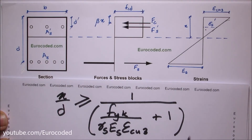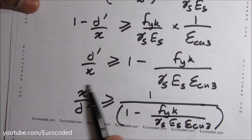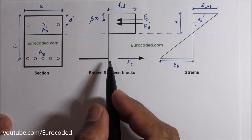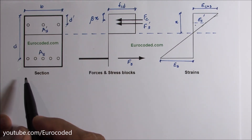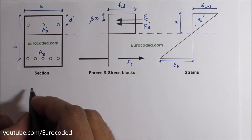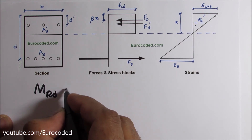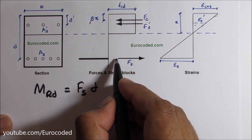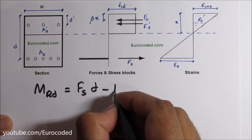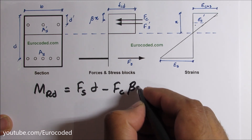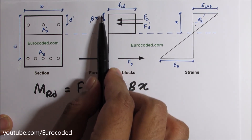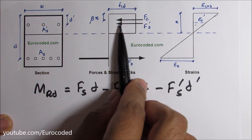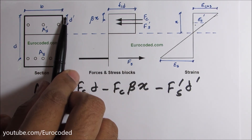If both yielding conditions are satisfied for the bottom and top reinforcement, we can take moments about any point to calculate the bending resistance. Taking moments about the tensile steel, MRd equals FS times (D minus β·X) plus FC times (β·X) minus F'S times D'. Each term corresponds to the respective force multiplied by its lever arm.